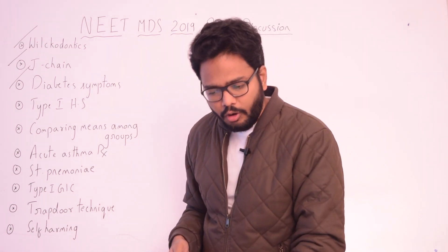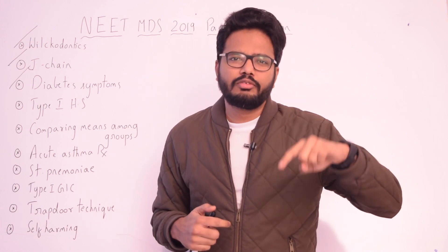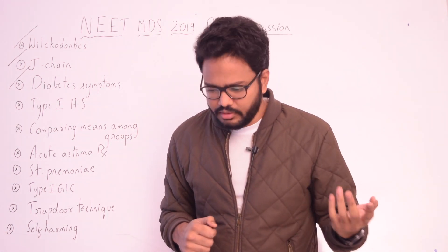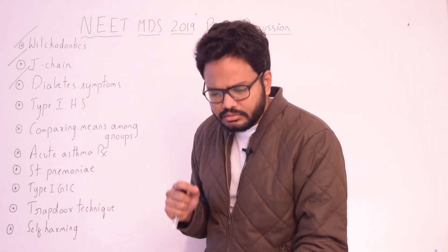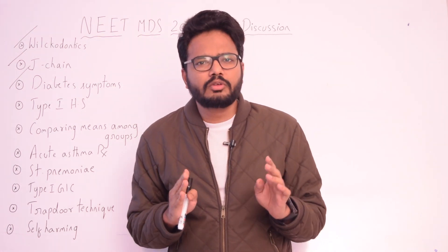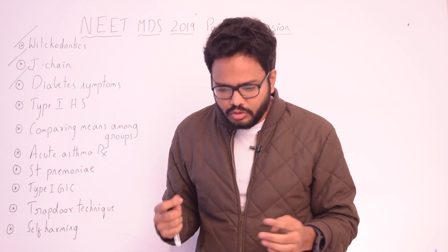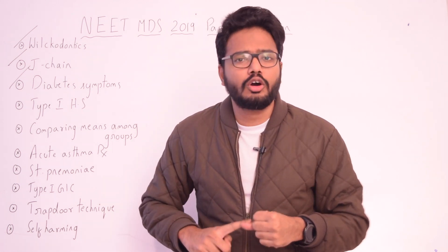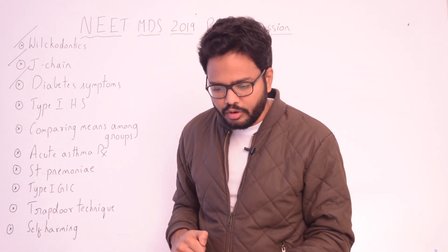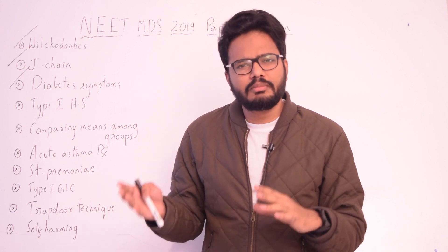Glycosuria can also occur in uncontrolled diabetes. Ketonuria can be present in diabetic patients but is also not diagnostic, as it is found in those following a keto diet (high fat, low carbohydrate) or those who are starving. However, proteinuria and microalbuminuria are specific for diabetic individuals. Microalbuminuria or proteinuria in the absence of urinary tract infection is an important indicator of diabetic nephropathy and increased risk of macrovascular disease.